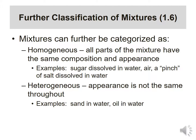Pure substances can be broken into elements and compounds. Mixtures can be broken into homogeneous or heterogeneous. Homogeneous means the same throughout — think about homogenized milk, sugar dissolved in water, salt in water, or air, which contains oxygen and nitrogen. A heterogeneous mixture has an appearance that is not the same all the way through. For example, sand in water — you can see the sand sitting at the bottom. Oil and water is another example. Smog is largely a heterogeneous mixture, with heavy particles hanging in the air.